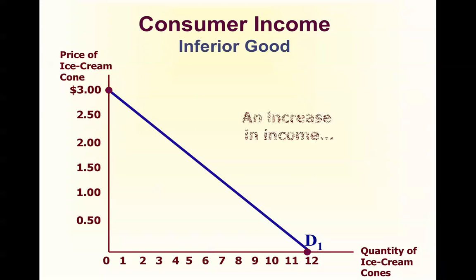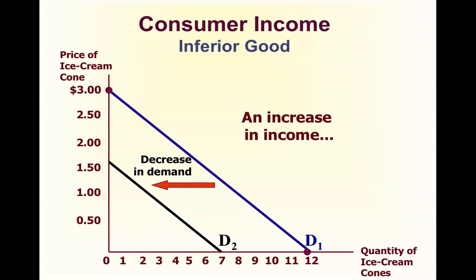For an inferior good, when there is an increase in income, there will be a decrease in demand — demand will shift to the left. You will buy less of the good at every price. Fast food restaurants, seeing movies at home on Netflix — all would be examples of inferior goods. This has nothing to do with perceived quality; it is strictly a relationship between the amount of money you have and whether you'll buy the good.